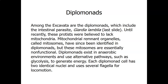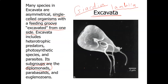The diplomonads include Giardia lamblia, which is an intestinal parasite. They exist in anaerobic environments such as the intestines. Each cell has two nuclei and it moves with several flagella. If you go back and look at the picture, you can see the flagella — there are several that enable it to move.